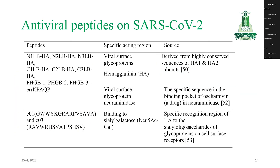Here are examples of already existing antiviral peptides. For example, IN1, IN2, and IN3 all act on specific regions — for example, acting on the virus, viral surface glycoprotein, or hemagglutinin. These are all derived from a highly conserved sequence of H1 and H2 and HA2 subunits. ERAKP and AQKP also act on viral surface glycoprotein neuraminidase.